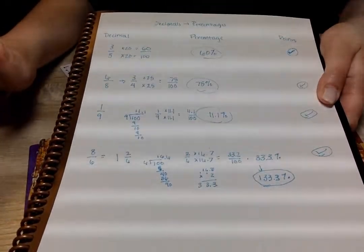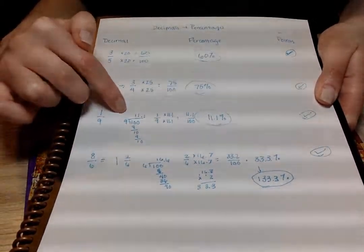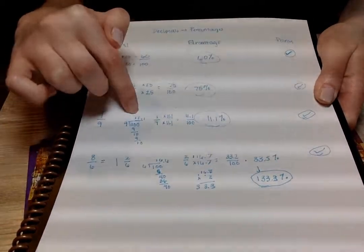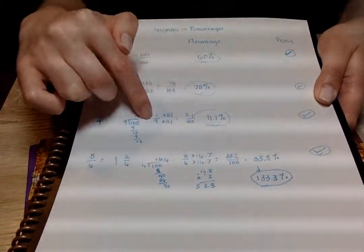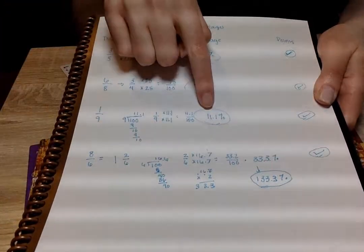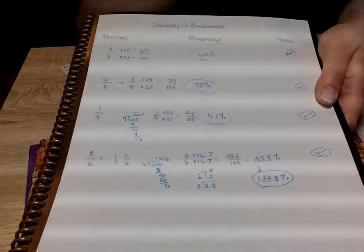Another challenging example would be 1 over 9, where they instead might have to show their division first to see how many times 9 goes into 100, which is 11.1. So they'd multiply both of these by 11.1, and they'd get 11.1%. Again, whoever gets there the fastest makes a little check mark.